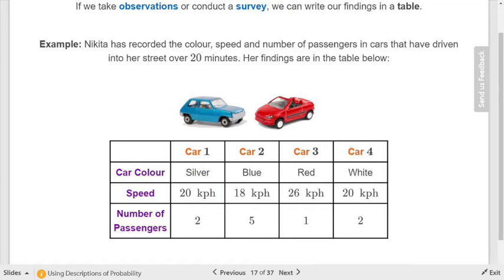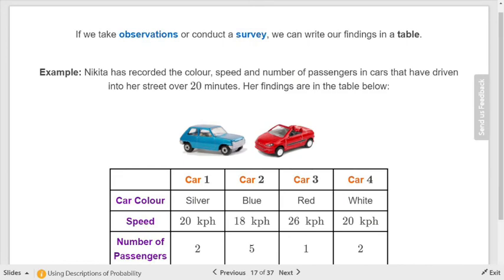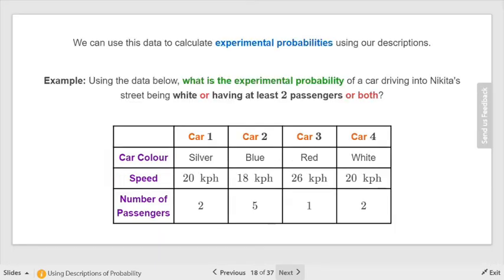We can see that they have different attributes. Car one is silver, it's going 21 kph and had two people in it, and you can see for the others. We're going to use this information to answer some questions, but pay attention to and, or, or. This is an experiment because this student was actually looking at cars passing onto her street. She actually saw them. This is not theoretical probability. This probably wouldn't happen exactly in the same way if you watched cars on your street. That's why it's experimental.